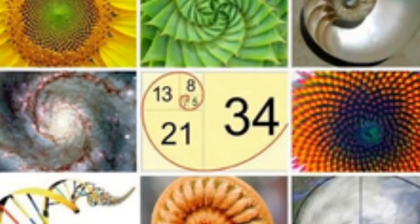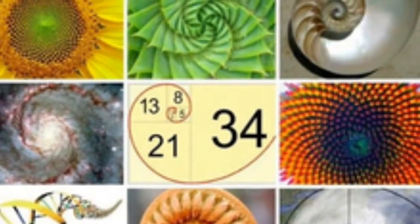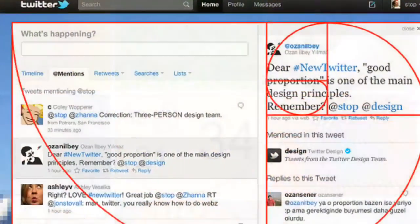Now the question might be where can I find the golden ratio? Well, you can find the golden ratio everywhere. It exists everywhere in nature.